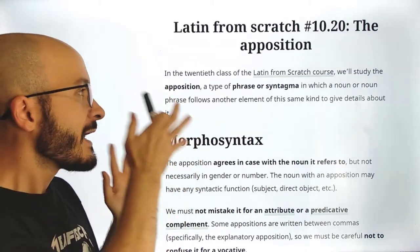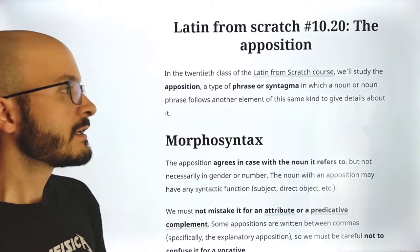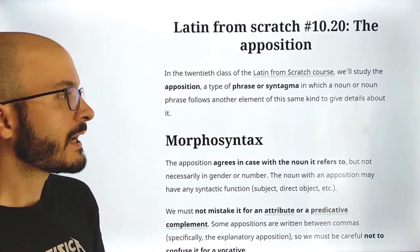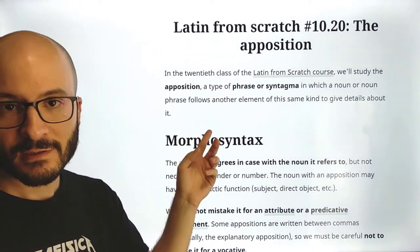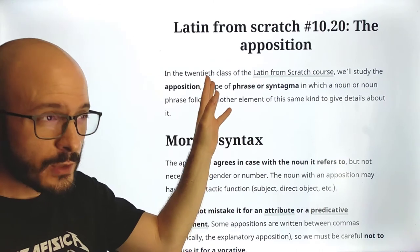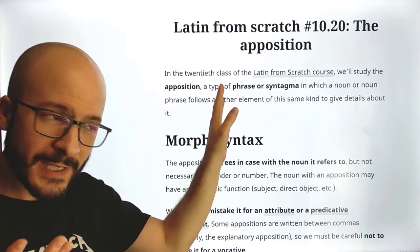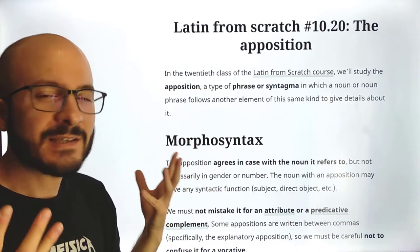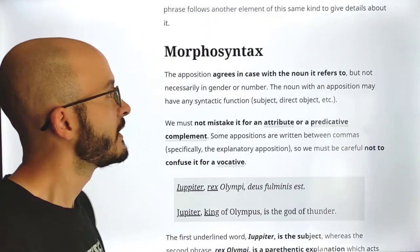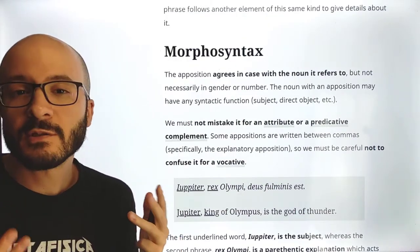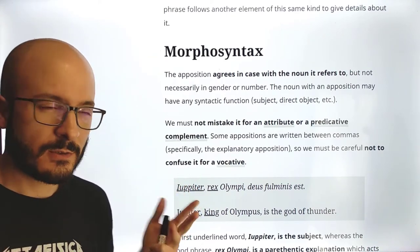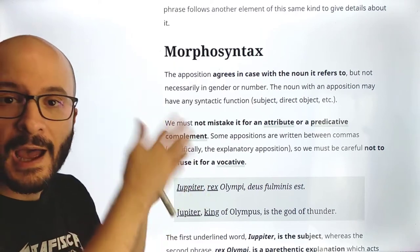So the apposition is a phrase in which a noun or noun phrase follows another element of the same kind to give details about it. Of course, this kind of definition might technically be correct, but it doesn't really say much. So let's go further, because it's not so important what it is as how it works. Let's focus on how it works.